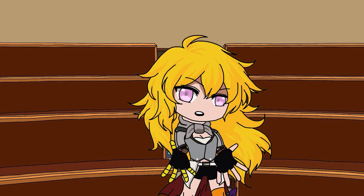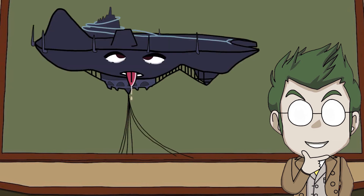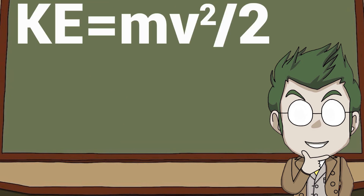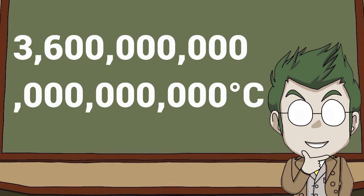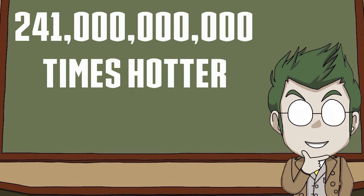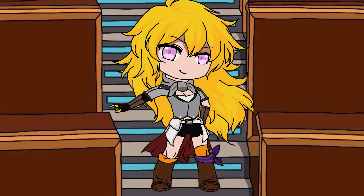Now can we work out the impact force? We can. But first, I want to know how hot Atlas will get due to friction. Using KE equals mv squared divided by 2, we get 3.6 quadrillion degrees Celsius or 6.5 quadrillion degrees Fahrenheit — which is about 241 billion times hotter than the center of the sun. So everyone on Atlas would be burned alive. Now that's a grim situation.